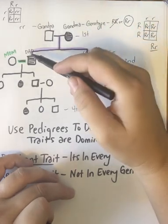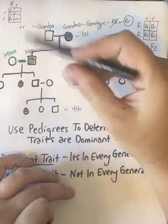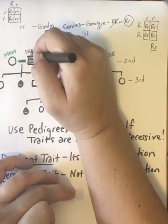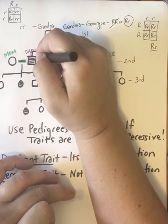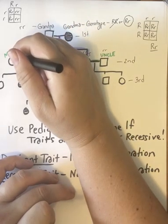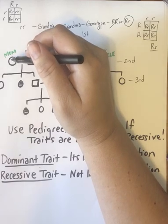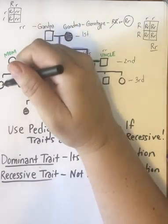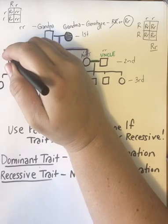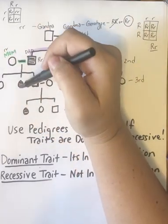However, the dad — because he is an offspring of grandma and grandpa — his genotype has to be heterozygous. If the mom were homozygous dominant, then more of my siblings would be affected. So we obviously know my mom would be considered homozygous recessive.